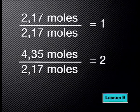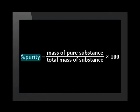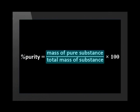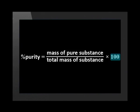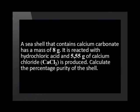Let us now investigate a problem involving percentage purity. This seashell contains calcium carbonate, but also other impurities. Let us determine the percentage purity of this seashell using the equation: percentage purity equals mass of pure substance over total mass of substance, multiplied by 100. Here is the problem: a seashell containing calcium carbonate has a mass of 8 grams. The shell is reacted with hydrochloric acid and 5.55 grams of calcium chloride is produced. Calculate the percentage purity of the shell.